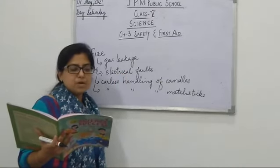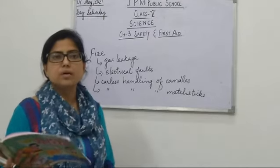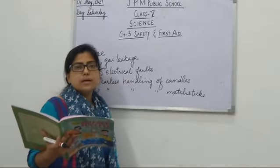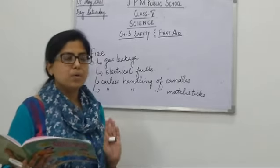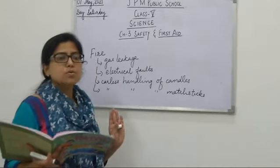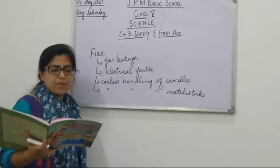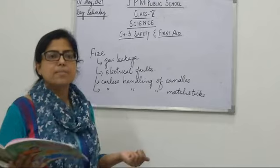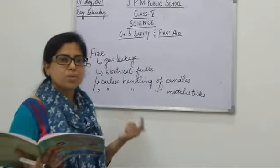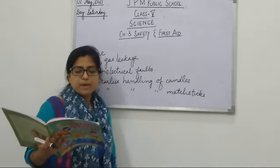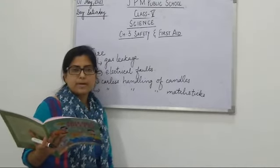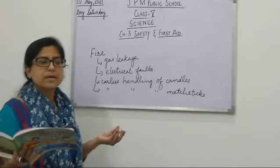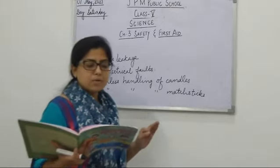Next: replace faulty gas pipes immediately. If your gas pipes are faulty or leaking from anywhere, then you must replace them as soon as possible. Check wiring in electrical appliances regularly for any fault or breaks in the wiring. Be careful while handling matchbox, candles, firecrackers, etc.